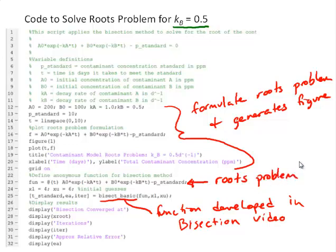And then we have our initial guesses, xl and xu, and then we'll simply call bisection. So there's our function call to the bisect basic function and display the results.